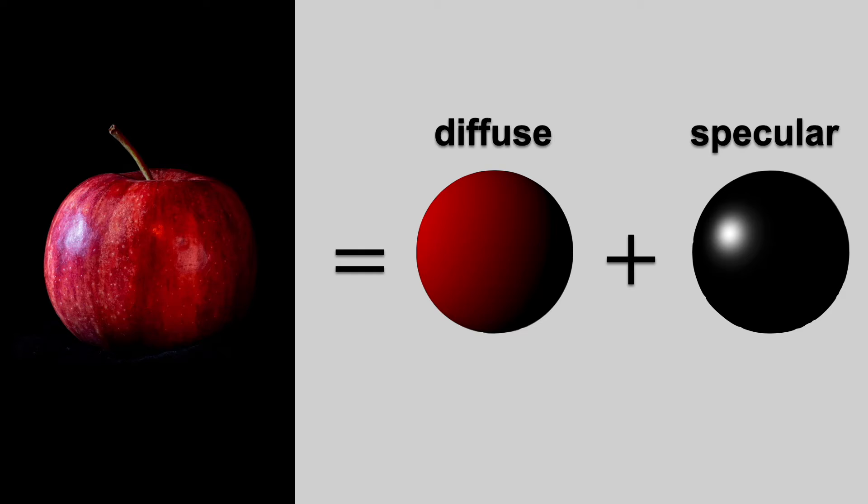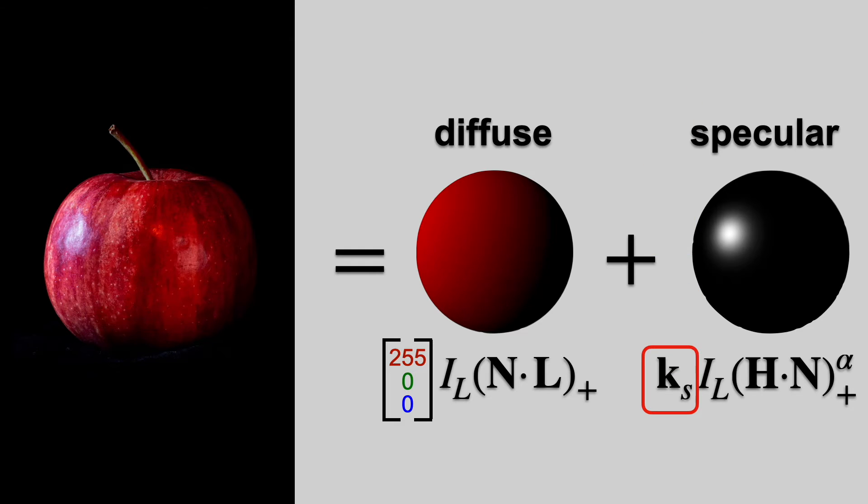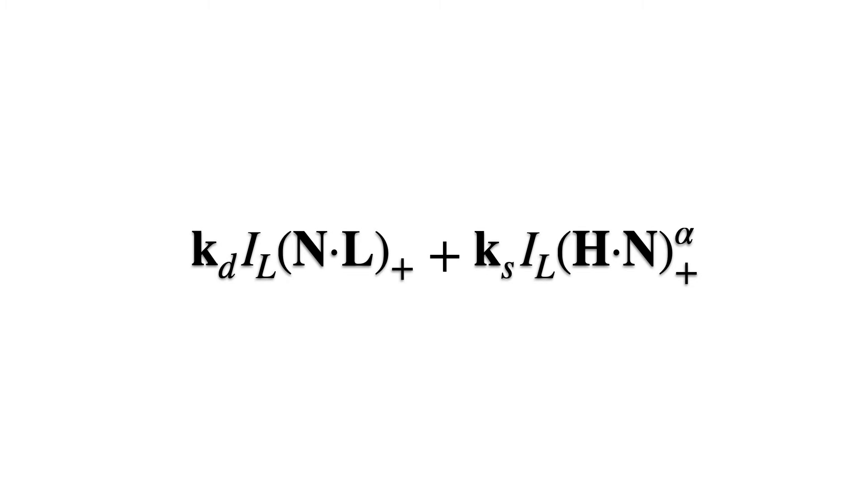As we saw in our videos on reflection, diffuse reflection is given by this equation, where Kd is the color of the surface, red in this case. This is the equation for specular reflection, and Ks is the color of the highlight, white in this case. We'll use this diffuse and specular model.